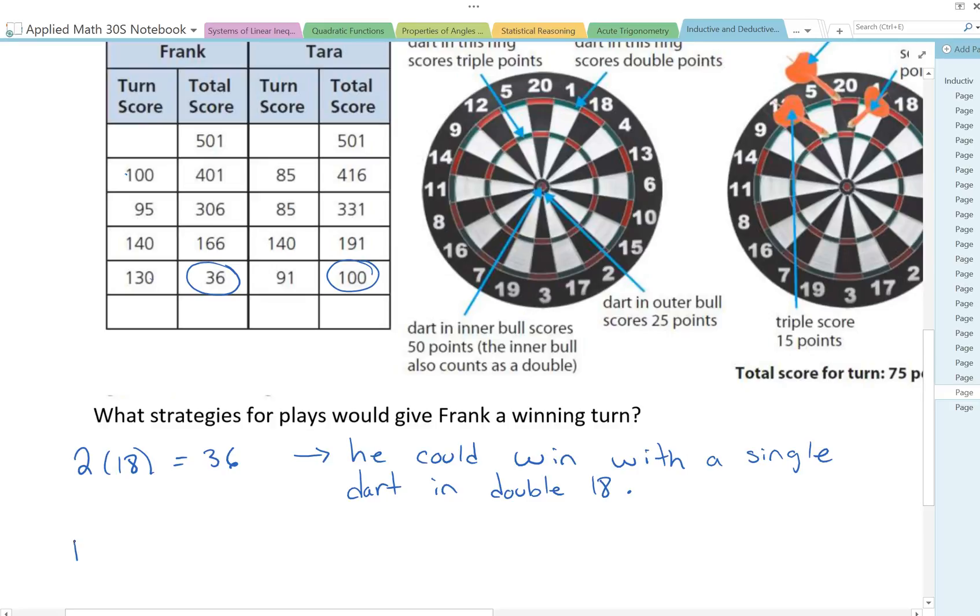Well if he hits the 18 and not the double 18 what would his second throw have to be? Well 18 plus 18 is 36 so he would have to get a double 9. He'd have to score right on the outer edge of the 9, so that would be the other possibility to get 36.